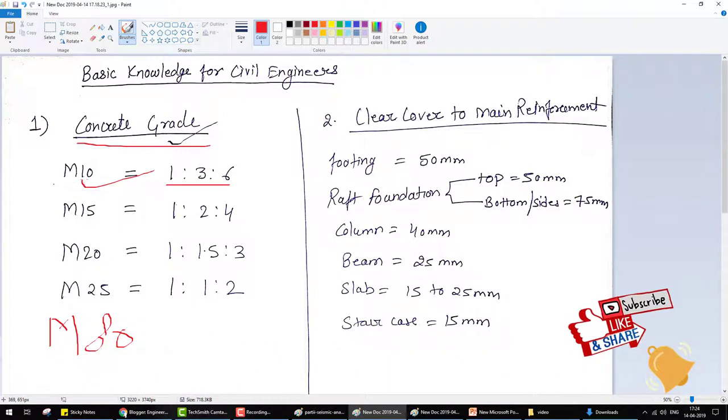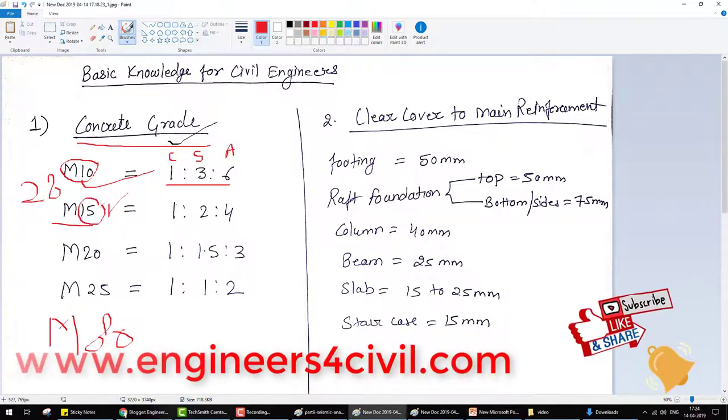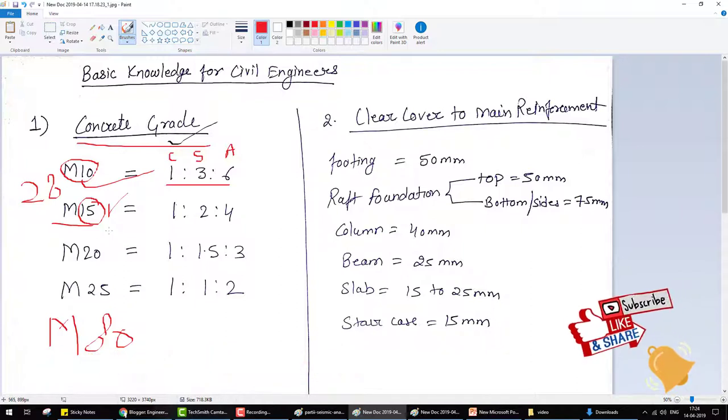The ratio is 1 for cement, 3 for sand, and 6 for aggregate. For M15 mix design, 15 means the strength of the concrete after 28 days is 15 newton per mm square. The ratio of this concrete is 1 cement, 2 sand, and 4 aggregate.